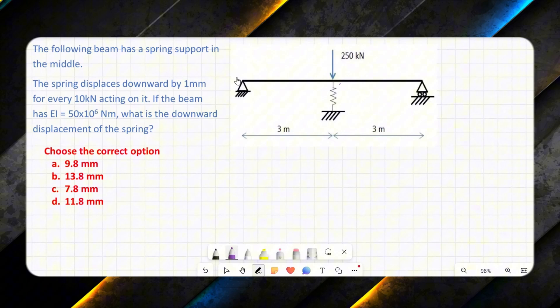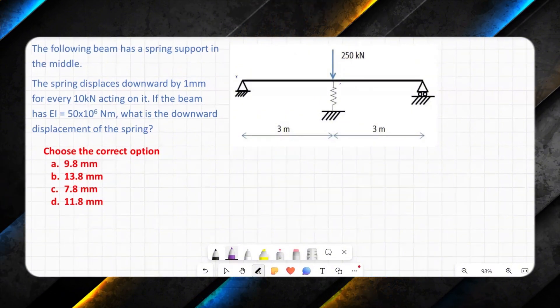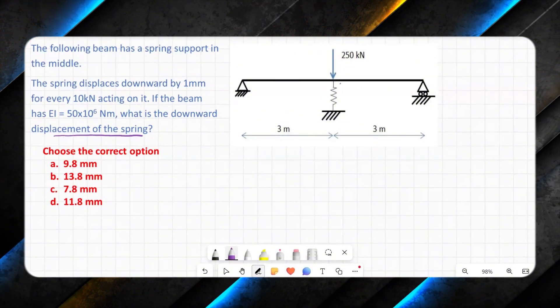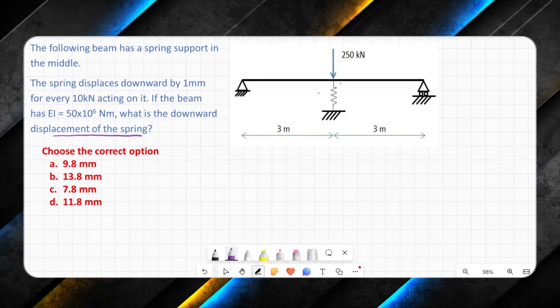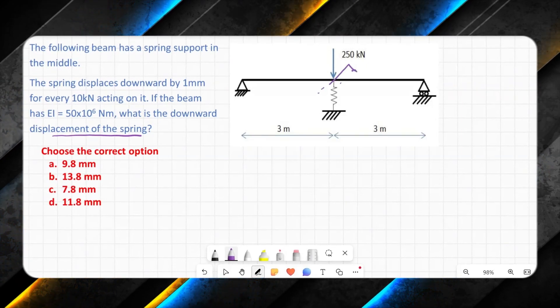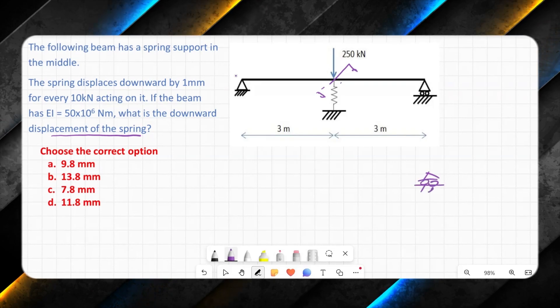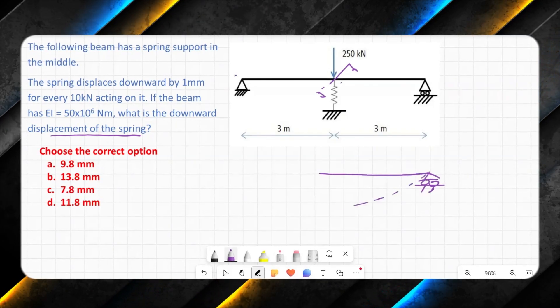Then I will combine these deflections to find out the downward deflection of the spring. So let us have a free body cut over here. This will show me a roller support, and then we have deflection like this and deflection like this.